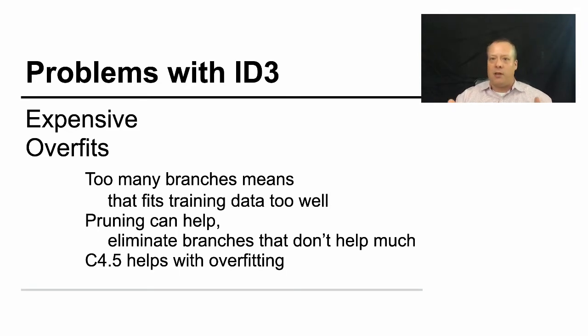Pruning can help this. You can cut back in the leafs. You can cut back some of the decisions. So rather than going all the way down to the very bottom, you can go up a level. So you don't make that last decision point, but just leave the classes kind of mixed at the previous decision point. And there's an algorithm called C4.5, an extension to ID3 that specifically helped with overfitting.